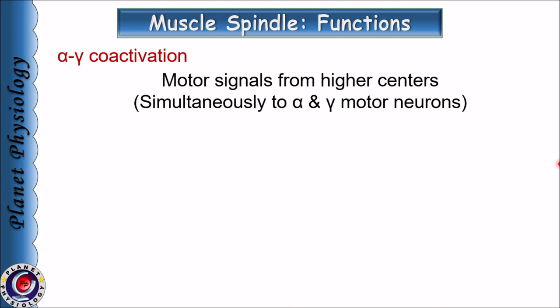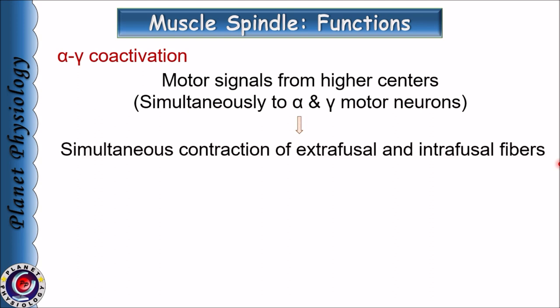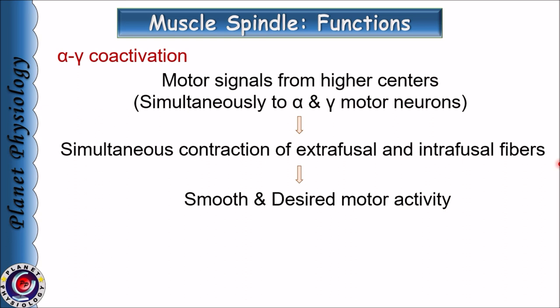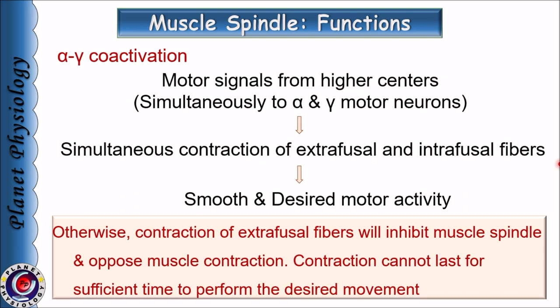During voluntary movement, descending tracts send simultaneous signals to alpha as well as gamma motor neurons. This simultaneous activation of alpha and gamma motor neurons is referred to as alpha-gamma coactivation. Due to this coactivation, there is simultaneous contraction of both extrafusal as well as intrafusal fibers, leading to smooth progression of motor activity up to the desired extent. This helps in maintaining the sensitivity of the spindle during contraction and during reflex adjustment of alpha motor discharge. This is essential to continue contraction till the desired limit is reached — if alpha-gamma coactivation is absent, contraction cannot last for sufficient time to perform the desired movement.